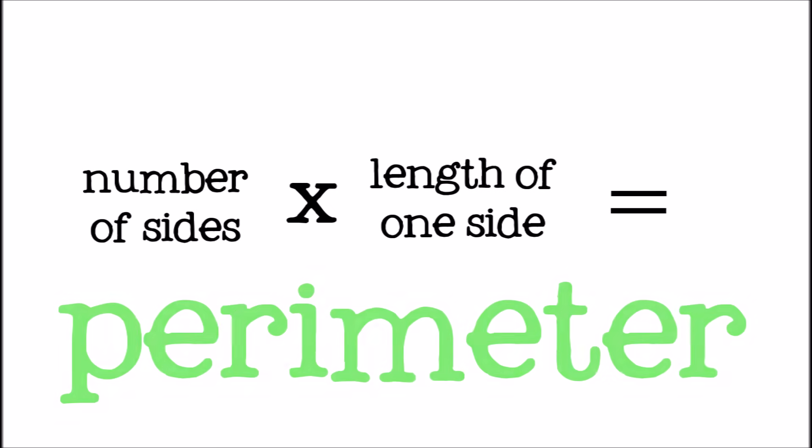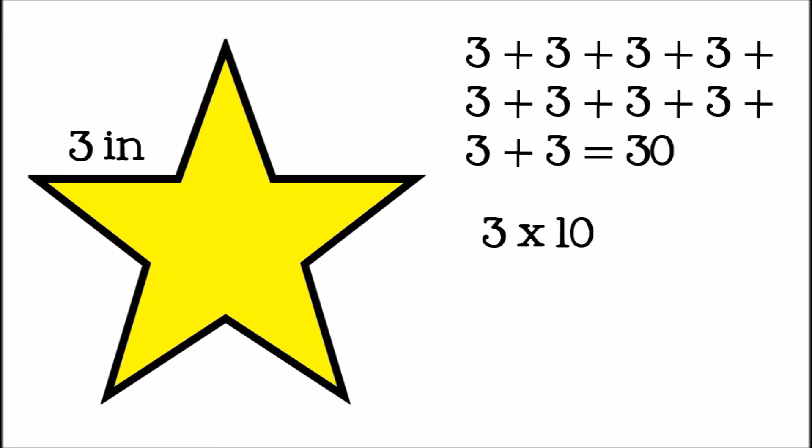Let's try another one. This is a star. It has ten sides. Each side is three inches long. We could just add up the sides, but it's much faster to multiply. Three inches times ten sides equals the perimeter of this shape: 30 inches.